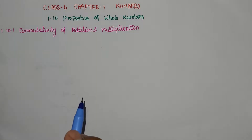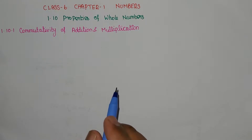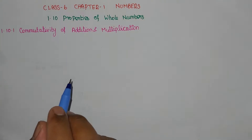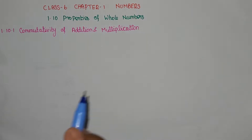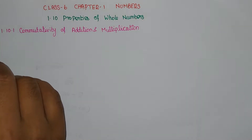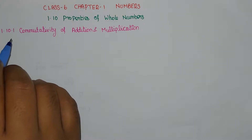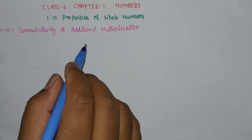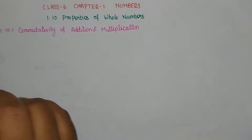Hello students. In this video we are going to learn Class 6, Chapter 1: Numbers, section 1.10 Properties of Whole Numbers. The topic is 1.10.1 Commutativity of Addition and Multiplication, Problem Number 1.